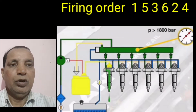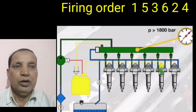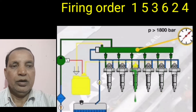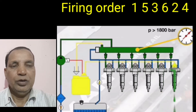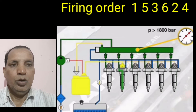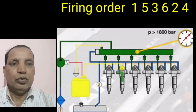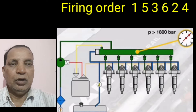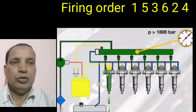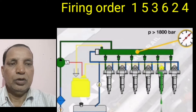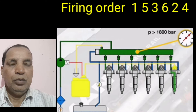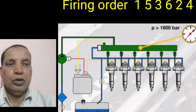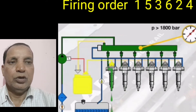Hi friend, today I show to you how the six cylinder engine is fired. The systematic firing order for the six cylinder engine is 1, 5, 3, 6, 2, 4. This is the continuous process of the engine when the engine will be running smoothly, and the firing order is as per the above.